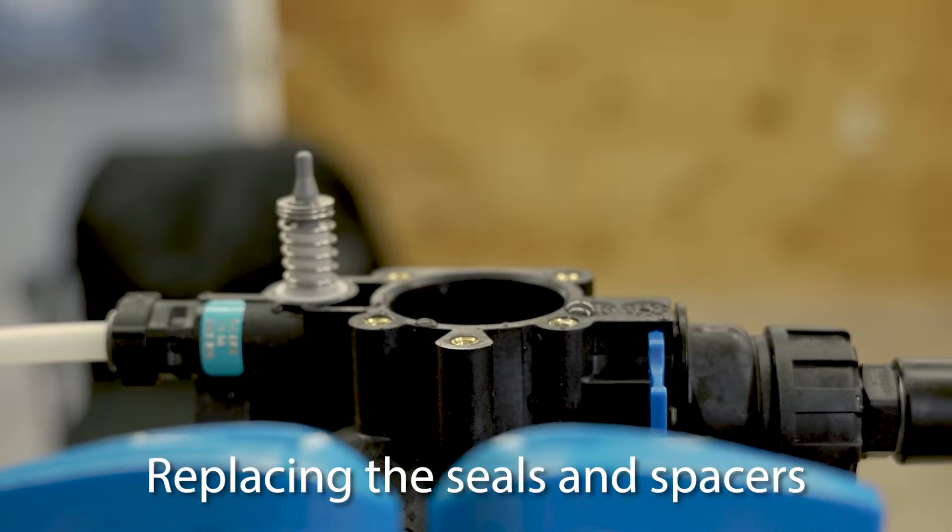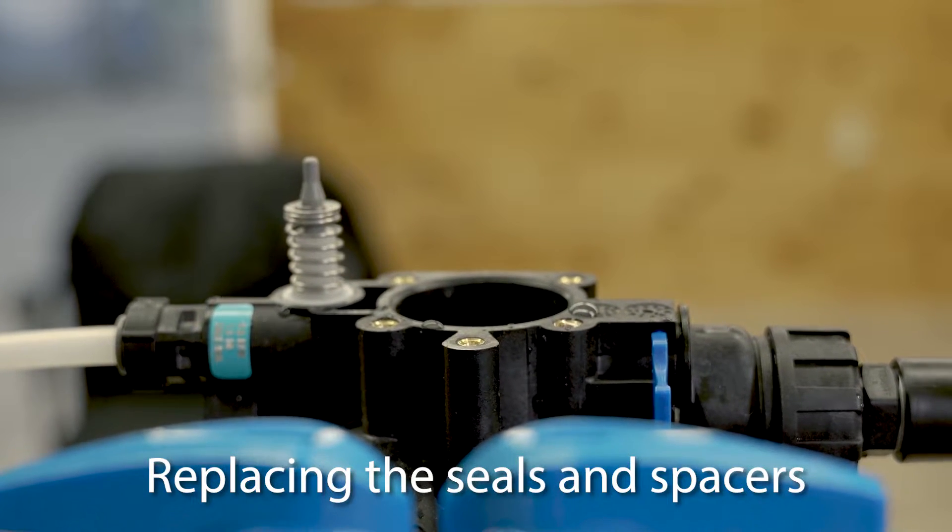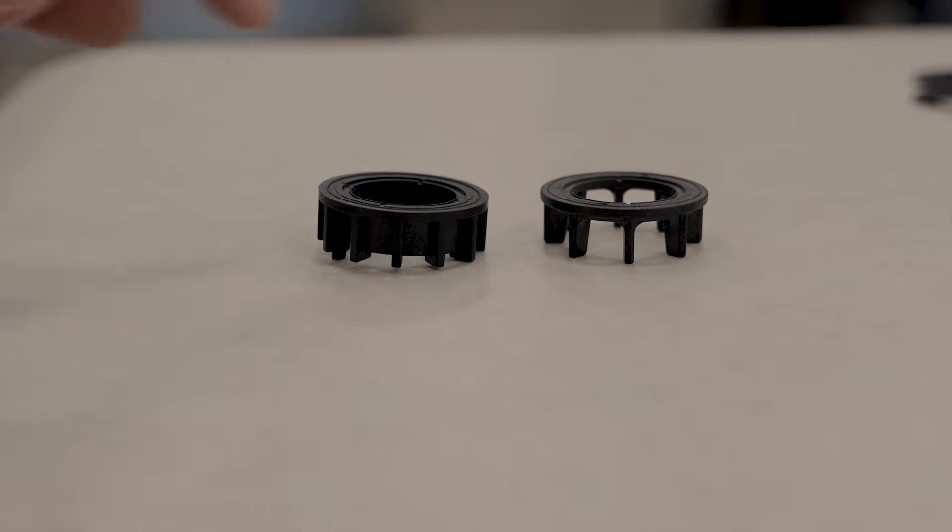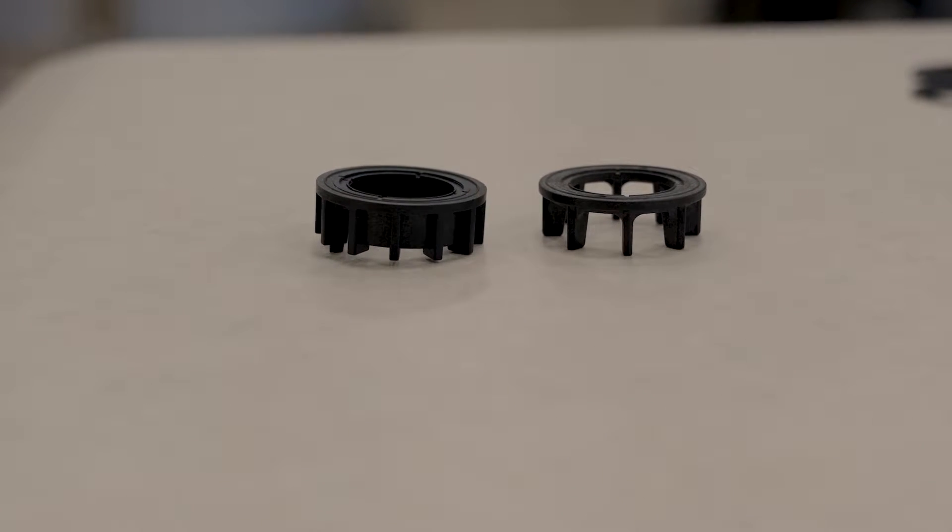When replacing seals and spacers, the first thing you're going to put back into the valve body is the end spacer. At the bottom of the valve body you'll have one of two types of end spacers. It does not need to be replaced.